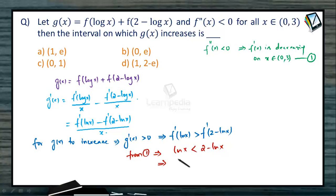So ln x should be less than 1. When will the logarithm of x be less than 1? Yes, x should be from 0 to e. When x is from 0 to e, ln x value will be less than 2 - ln x.